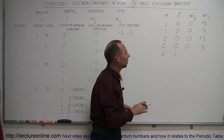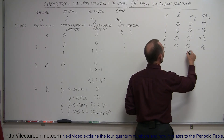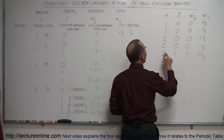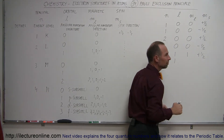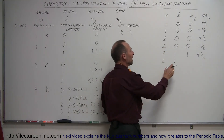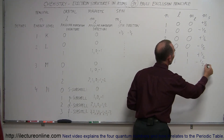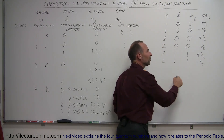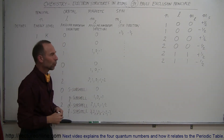The next electron could still be in the second energy level, but now it would have to be in the p subshell, meaning it has a different angular momentum. It could have a possibility of three directions. Let's call this one plus one-half. The next electron would also have energy level two, still in the p orbitals with the same angular momentum and the same angular momentum direction, but it would have to have a different spin direction in order to exist in the same orbital.